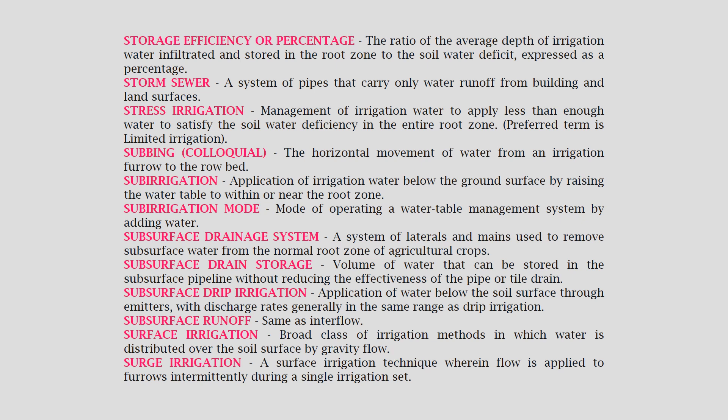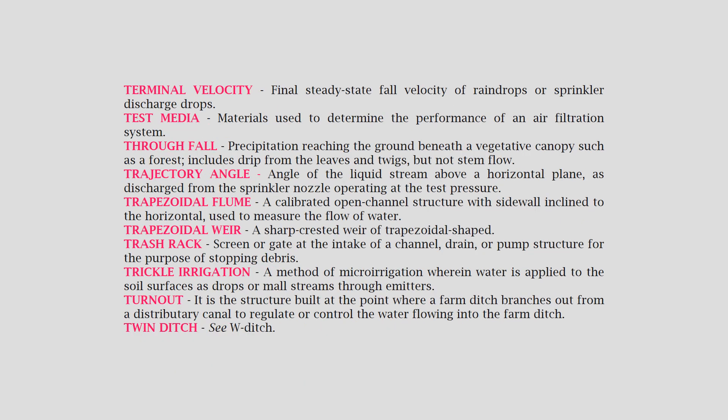Subsurface runoff: same as interflow. Surface irrigation: a broad class of irrigation methods in which water is distributed over the soil surface by gravity flow. Surge irrigation: a surface irrigation technique wherein flow is applied to furrows intermittently during a single irrigation set. Terminal velocity: the final steady-state fall velocity of raindrops or sprinkler discharge drops. Test media: materials used to determine the performance of an air filtration system. Throughfall: precipitation reaching the ground beneath a vegetative canopy such as a forest, including drip from the leaves and twigs but not stem flow.